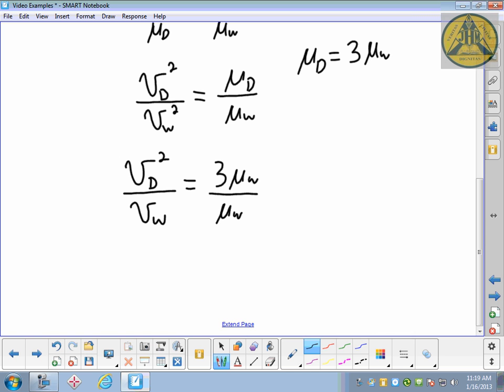So down here, I now have VD squared over VW squared equals 3 mu W over mu W. That's why the question doesn't give you what the coefficients of friction actually are, because they divide out—it doesn't really matter. All that's important is the mathematical relationship between them and how much they're reduced by a factor of 3. We can put our numbers in now.